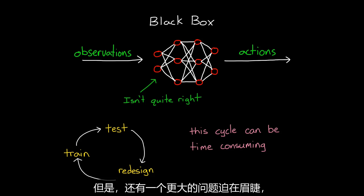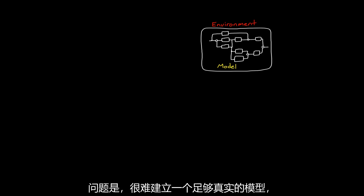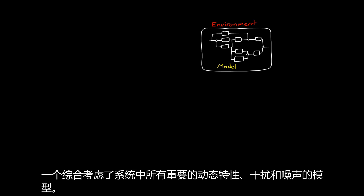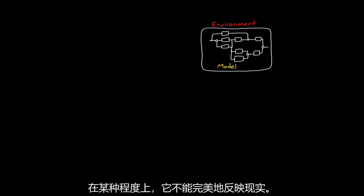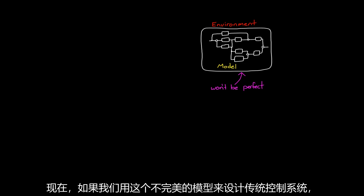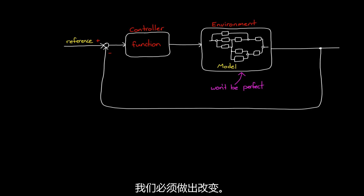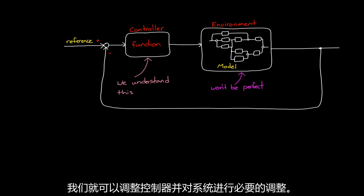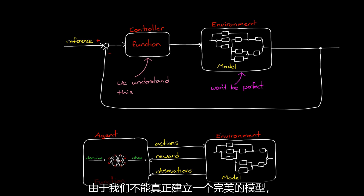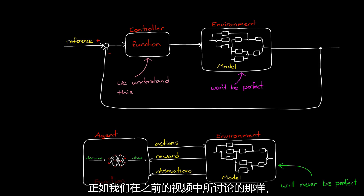There is a larger issue beyond training time: it comes down to the needed accuracy of the environment model. It's really hard to develop a sufficiently realistic model — one that takes into account all of the important dynamics, disturbances, and noise. At some point, it's not going to perfectly reflect reality, which is why we still have to do physical tests. Now if we use this imperfect model to design a traditional control system, there's a chance our design won't work perfectly on the real hardware, but since we understand the functions we created, we're able to tune our controllers and make the necessary adjustments. With a neural network policy, we don't have that luxury. Since we can't build a perfect model, any training we do with it will be not quite correct. Therefore, the only option is to finish training the agent on the physical hardware, which can be challenging in its own right.